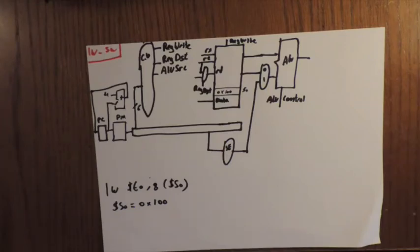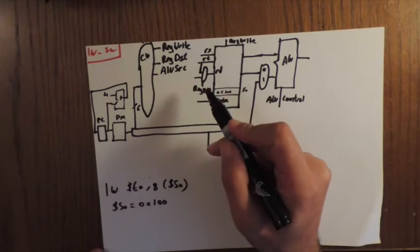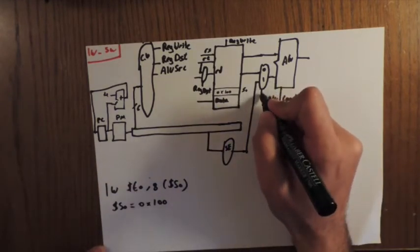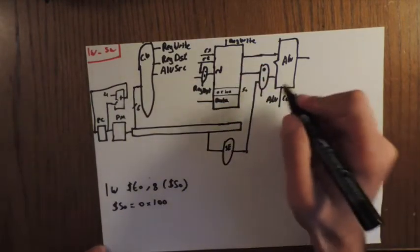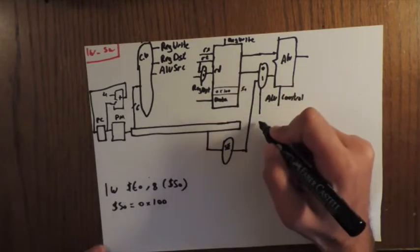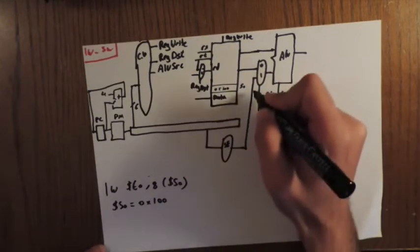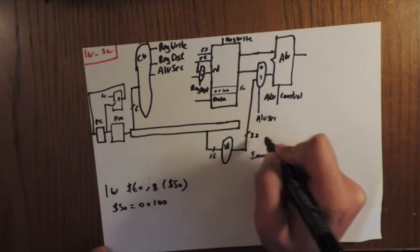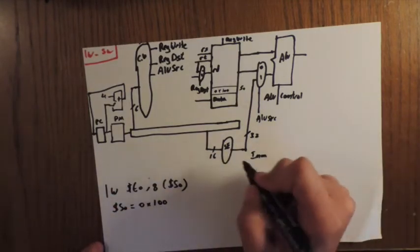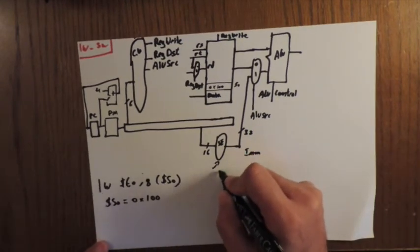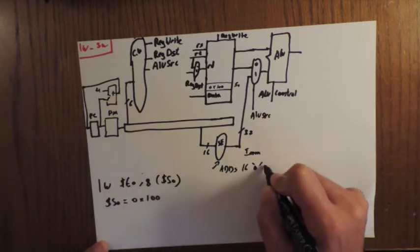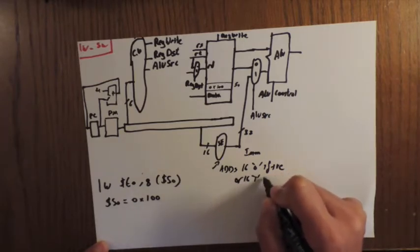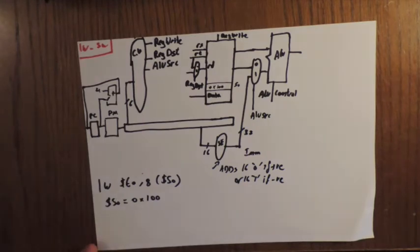Today's lecture modifies the previously explained datapath to include load word and store word. Until now we included support for R-format and I-format instructions by adding two multiplexers. The ALU source control line chooses between the sign-extended immediate, which takes 16 bits and transforms to 32 bits by adding 16 zeros if positive or 16 ones if negative.